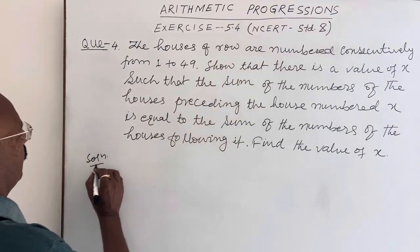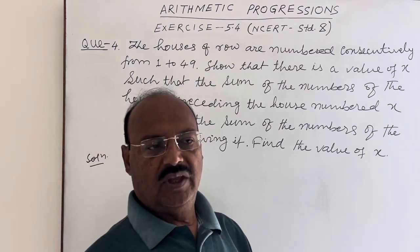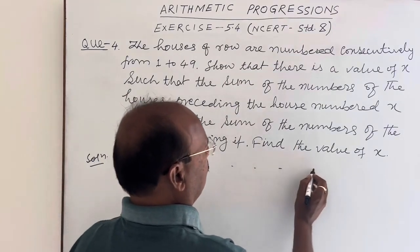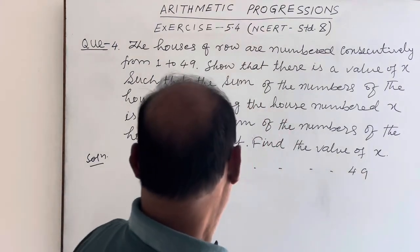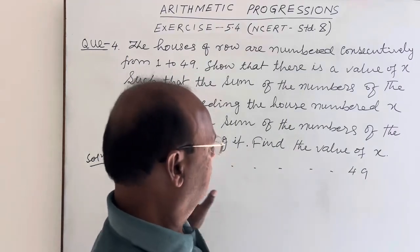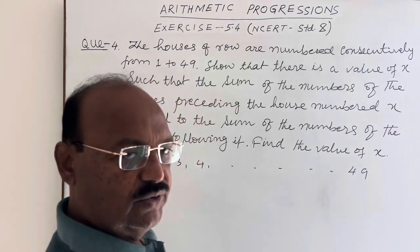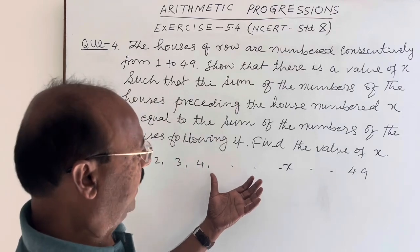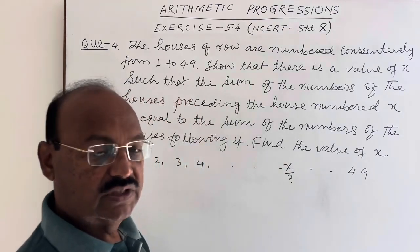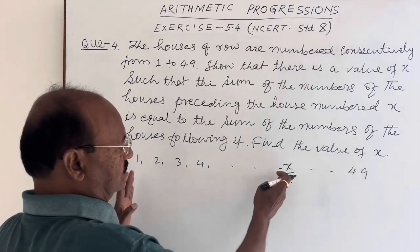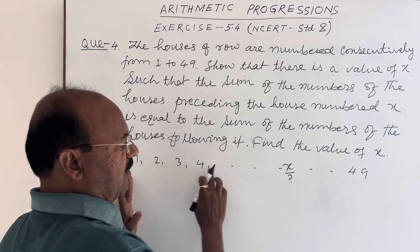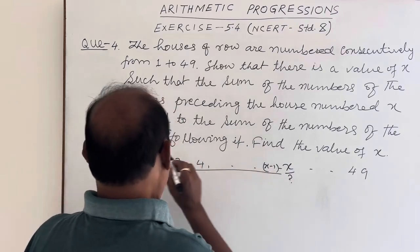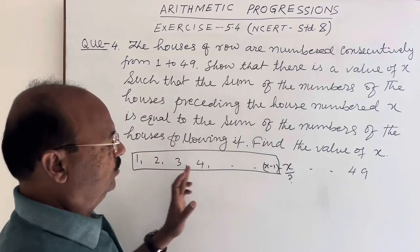Let's understand the question first. In total there are 49 houses, each numbered serially like 1, 2, 3, 4 and so on up to 49. Among all the houses there is a house numbered x, and we have to find out the value of x such that the sum 1 + 2 + 3 + 4 preceding to x — that is, sum from 1 to x minus 1 — satisfies the given condition.